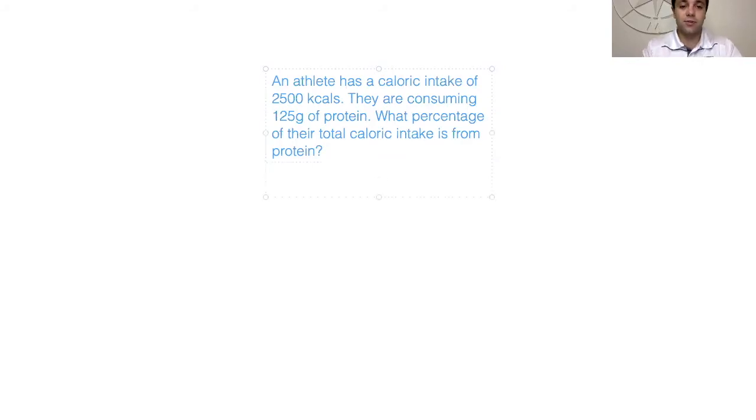So let's go ahead and see how we solve this. Step one would be to figure out how many kcals of protein we need, because they gave us it in grams, so we have to convert protein in grams to protein in kcals. So we have 125 grams of protein. In order to figure out how many kcals we have of protein, we have to multiply this by 4, because protein is 4 kcals per gram.